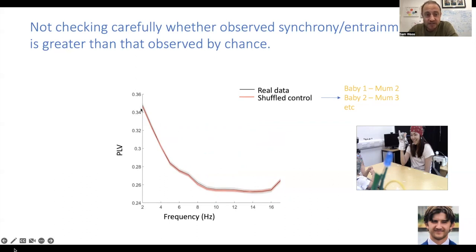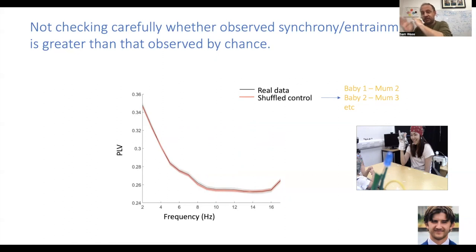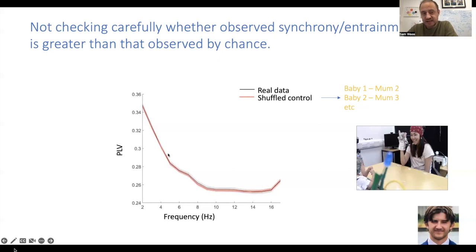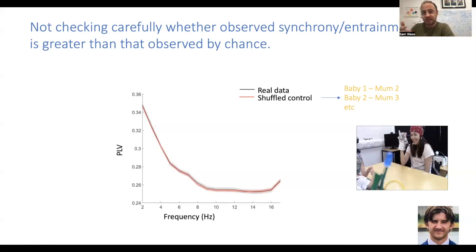This is really important because it's actually quite hard, in our experience, to find differences that genuinely differ from chance. My PhD student Ira produced this — real data showing PLV (phase locking value). The black line is the real data, and the shuffled control data is where he averaged PLV but compared non-interacting dyads — baby two to mum two, baby three to baby one, and so on. He gets quite a distinct pattern with PLV peaking in alpha in the real data, but pretty much exactly the same pattern appears in the shuffled control. Comparing with chance is an additional layer that reduces false positives and increases the chance of reproducible findings.